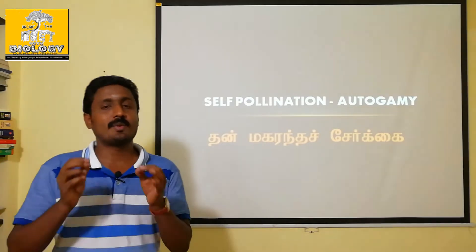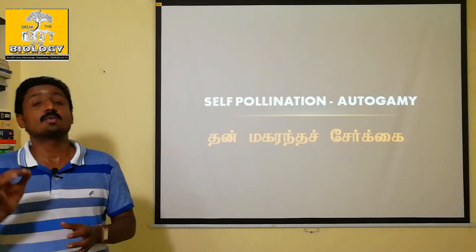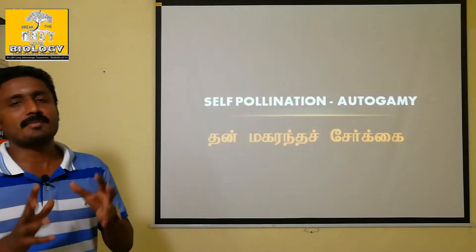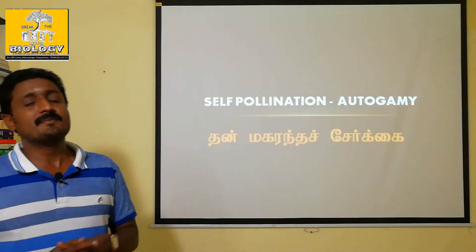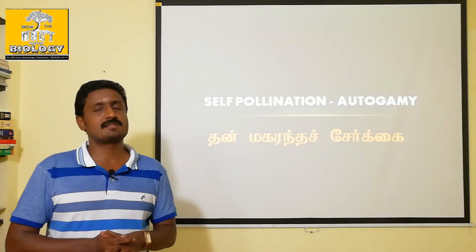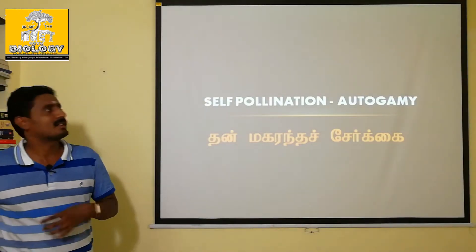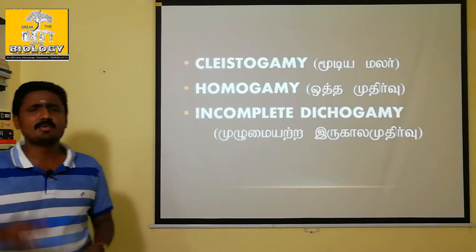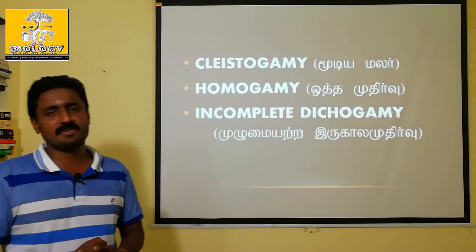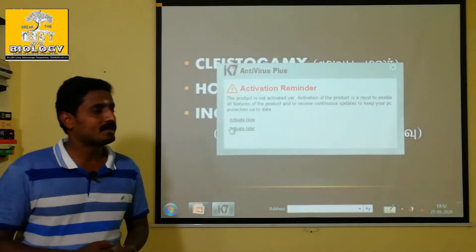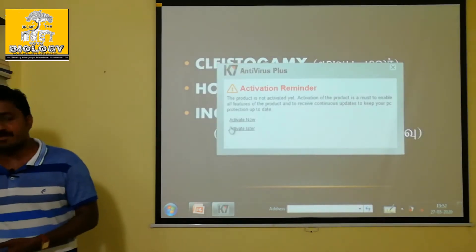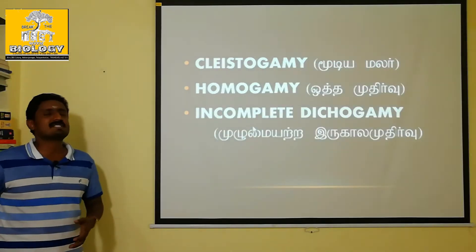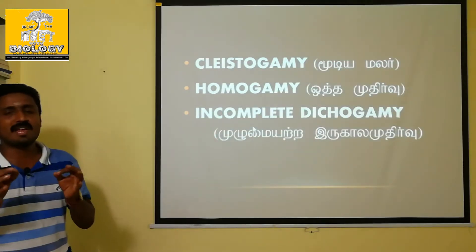What are all the adaptation characters that enhance self-pollination in a plant? We will discuss with examples. There are three types. The first one is Cleistogamous flowers — Cleistogamy.